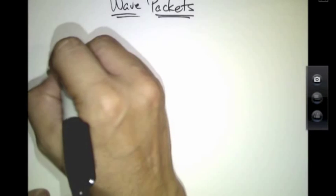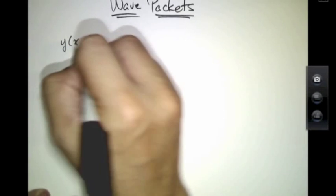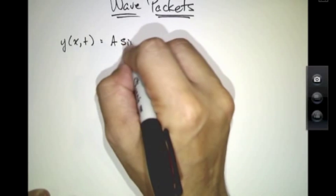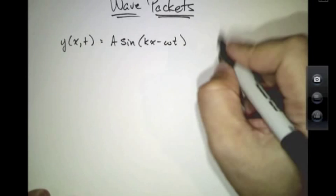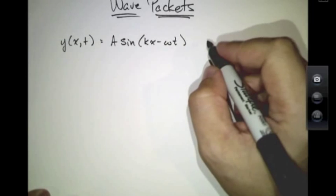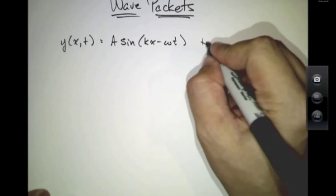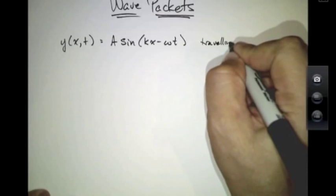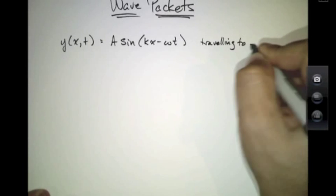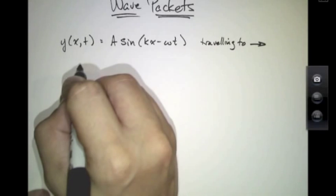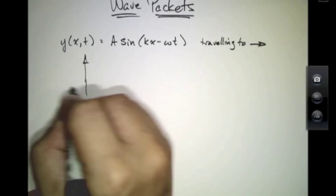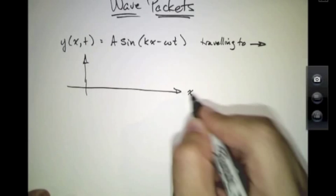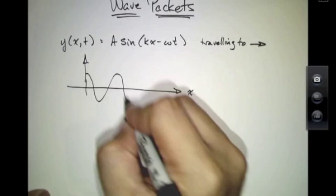If we represent a particle by a traveling wave, this means a wave packet moving to the right, or a wave moving to the right. This would be graphed like so.